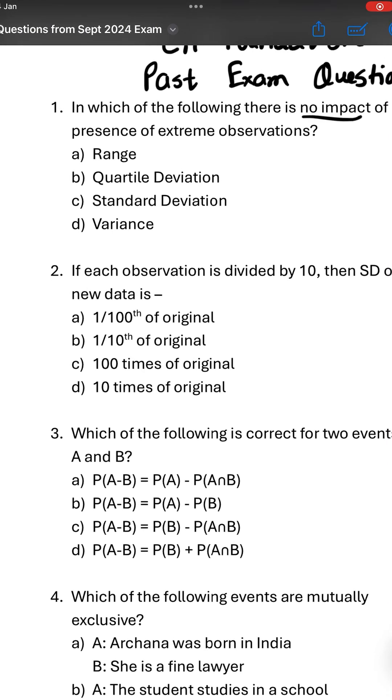In which of the following there is no impact of presence of extreme observations, means highest and lowest? Obviously range is not correct because range is highest minus lowest.